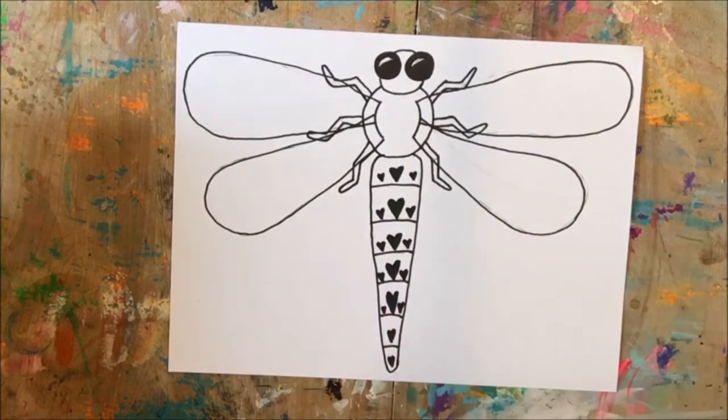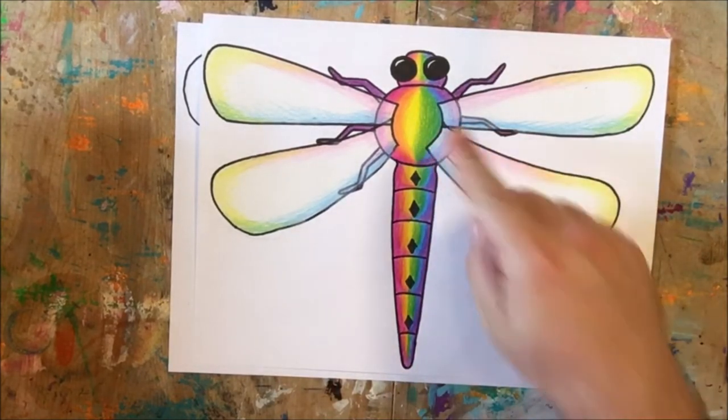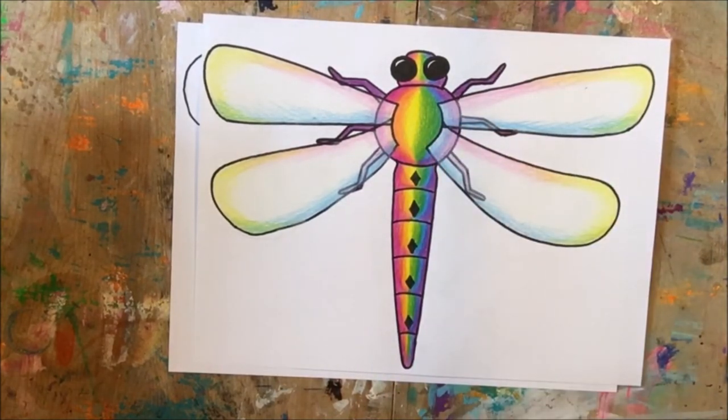You could make stripes here on the abdomen. As you can see on mine, I created mine with kind of a rainbow effect. And I just did this by using some of those color blending techniques that we've talked about in previous lessons.